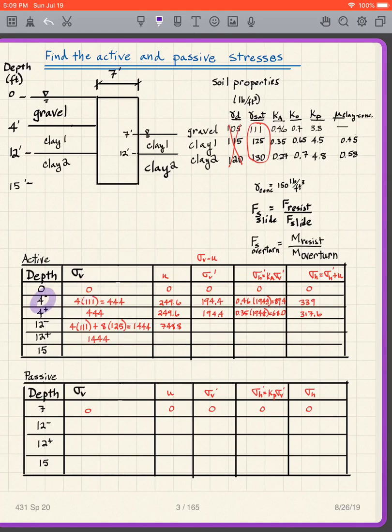So at 4 minus, what do I have? I've got 4 times 111. 444. And then at 4 plus, the sigma v is the same. I'm not going to go through why that is. We went through it in detail last time. At 12 minus, what do I have? I've got 4 gravel, 8 clay one. Gives me 1444. If you remember how to do that. And then again, at 12 minus and 12 plus, the value of sigma v in both cases is the same.